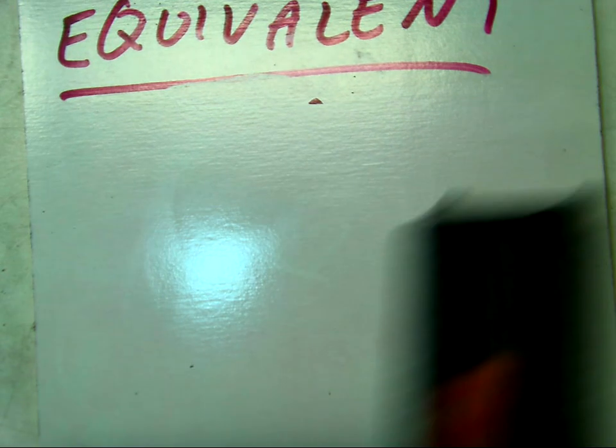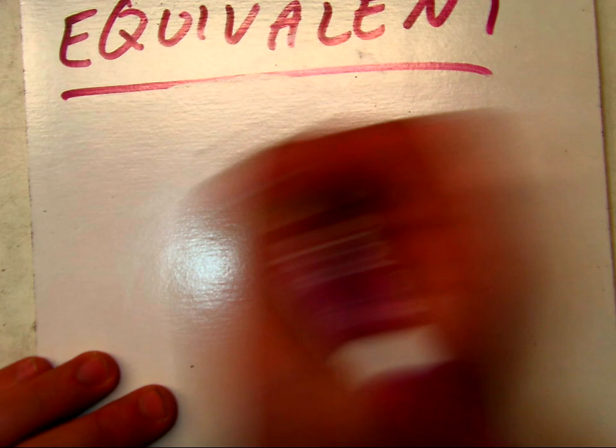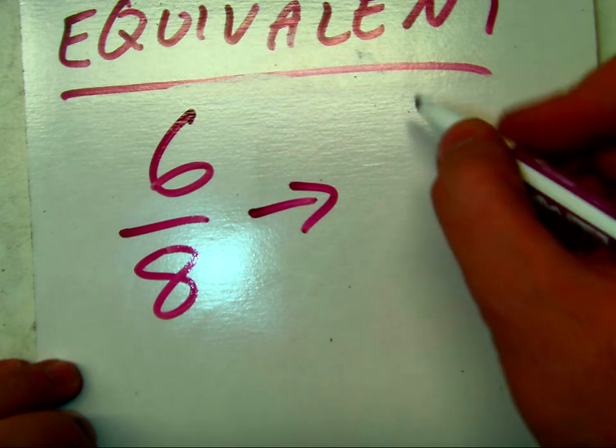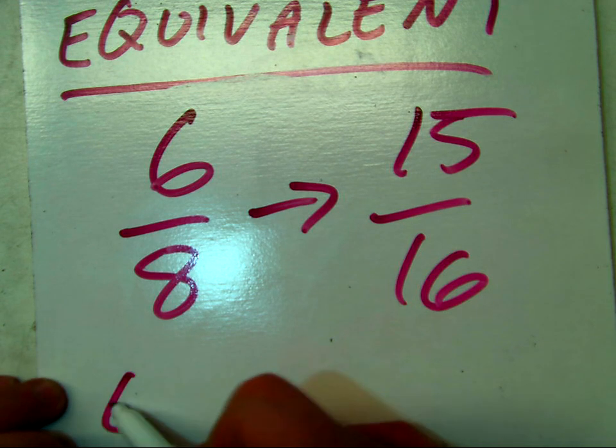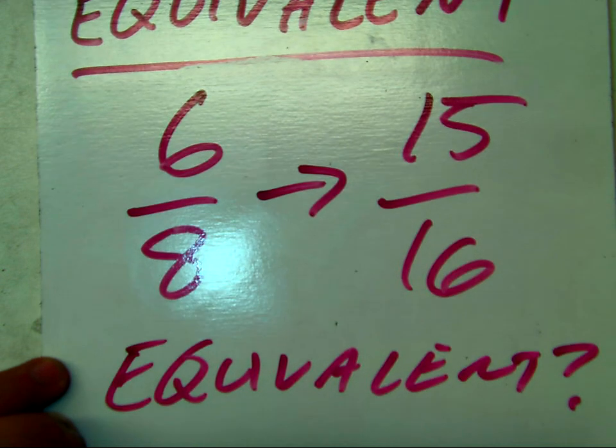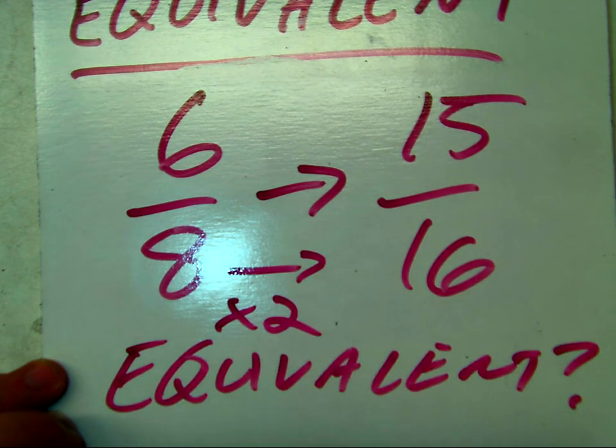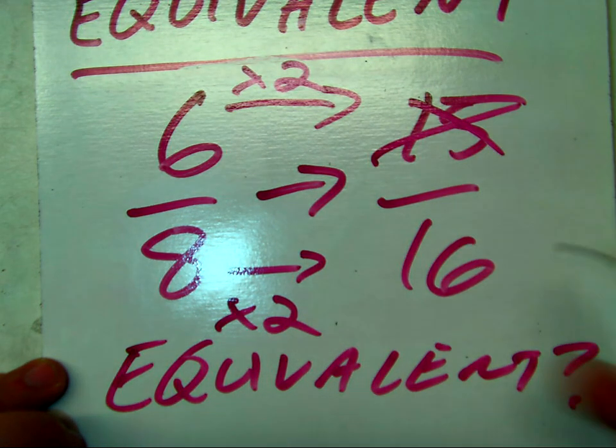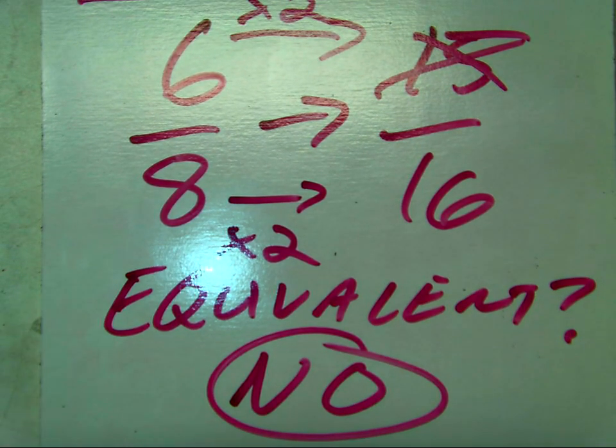Now, there's also non-examples. For instance, you might get a problem that says, is six-eighths equivalent to, I don't know, fifteen-sixteenths? Are they equivalent? Let's find out. Eight times two will be sixteen, but six times two will not be fifteen. These are therefore not equivalent. The answer will be no. Six-eighths and fifteen-sixteenths are not equivalent.